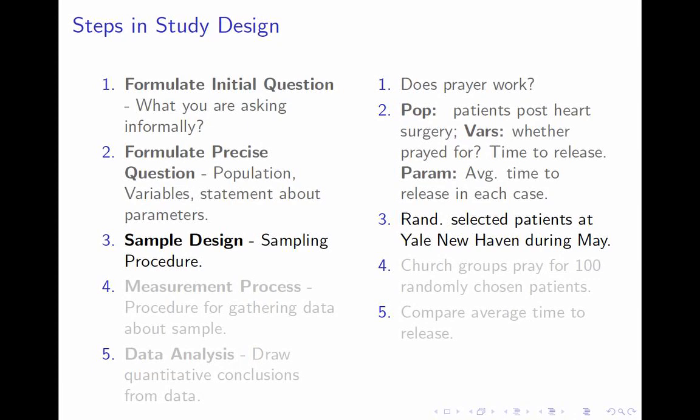The next step is the measurement process — the process of gathering data about the sample. Once you've picked your sample, you write down the values of each of the variables. It sounds simple but can be complicated. In our case, one variable is straightforward: we ask the hospital how long the 200 patients were in recovery. But the other variable — whether or not someone has been prayed for — is more complicated. How do you decide whether someone has been prayed for? How do you measure it?